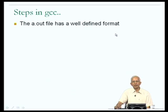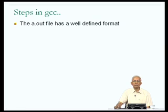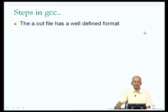Even if the temporary files generated by GCC are not of interest to us right now, we know for a fact that the a.out file is of interest to us, because that is the file we will want to execute to run our program. We wrote hello.c with a particular objective in mind — such as multiplying matrices. Therefore, to actually do matrix multiplication, we will now execute the a.out file.